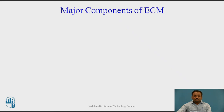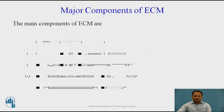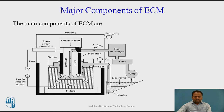Now we will see what are the major components of this Electrochemical Machining Process. The main components of ECM: This is the schematic figure showing the various components. The first important component is Power Supply. As our process is an electrochemical process, we need to supply electric current — 40,000 amperes with 2 to 30 volts of DC power.